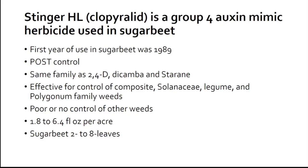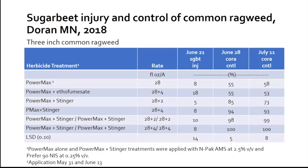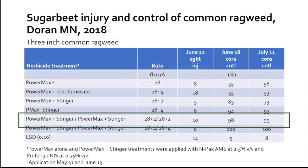It provides effective control of composite, solanaceae, legume, and polyganum family weeds. It offers poor or no control of other weeds. It is applied at 1.8 to 6.4 fluid ounces per acre to sugar beets at 2 to 8 leaves. In a previous study conducted by Extension Sugar Beet on 3-inch common ragweed, the 2 fluid ounce rate in a repeat application provides the highest amount of control, with 10% entry to sugar beets.